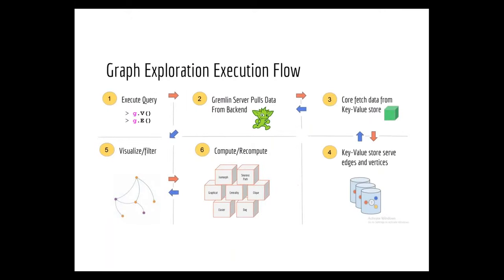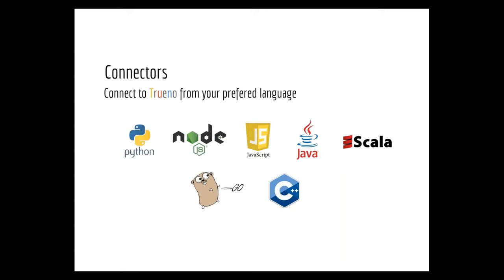This is a typical execution flow inside Trueno. You get a query — for example, G.V to get all vertices or G.E to get all edges. The Gremlin server pulls data from the back end. You can then choose to visualize it or run analytics. All analytics tasks are scheduled completely transparently across all available cloud resources. The language connectors support Python, Node.js, JavaScript, Java, Scala, and more — all transparently executed on this graph database.